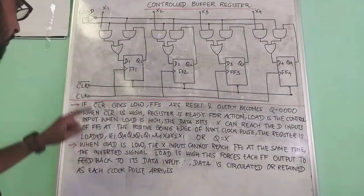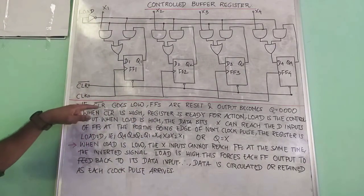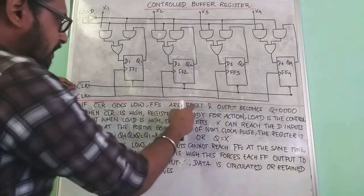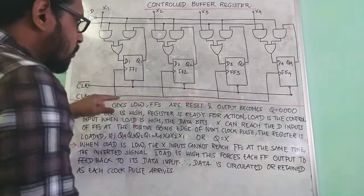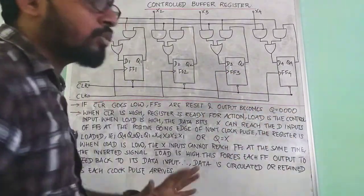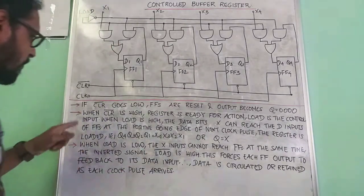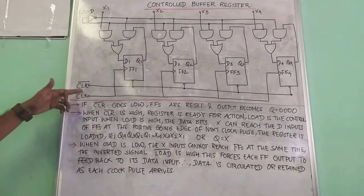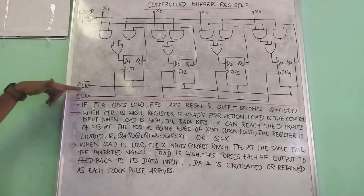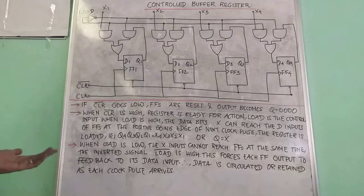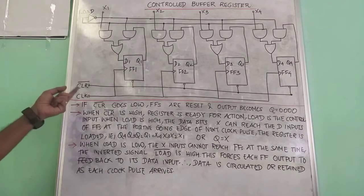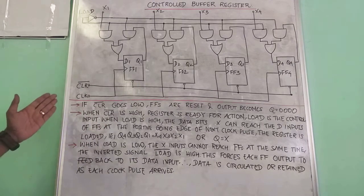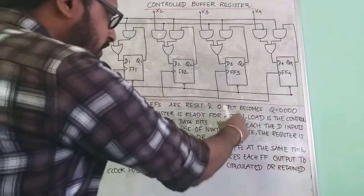Going directly into the design: we have CLR bar. When CLR bar goes low — that is, when we give a value of 0 — the flip-flops are reset, so the output Q becomes 0, 0, 0, 0. CLR bar is active low, so when it goes low it resets. Otherwise, when CLR is high, the register is ready for action.